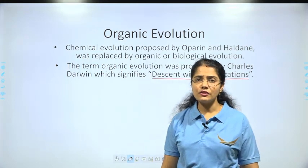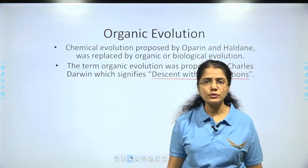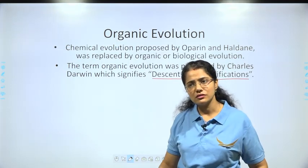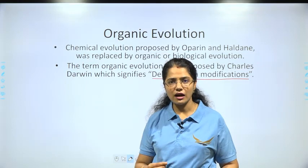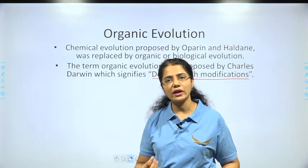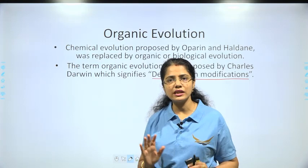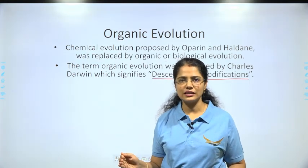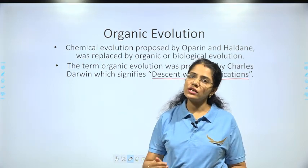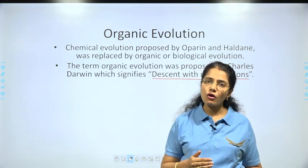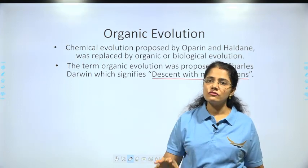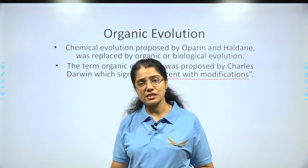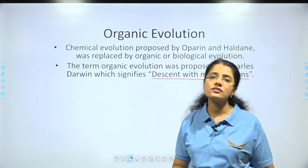For example, if we talk about the human population, there is a similarity among all of us — every human has two eyes, one nose, two ears, two hands, two legs. This is common and will be seen in every human being. But are we exactly the same? No, we are similar. And our ancestors are also common ancestors — we are all their descendants. However, these ancestors were present in different periods in the history of the earth.